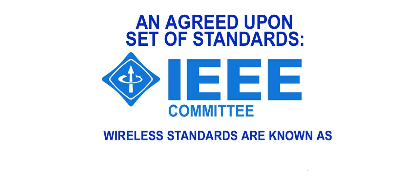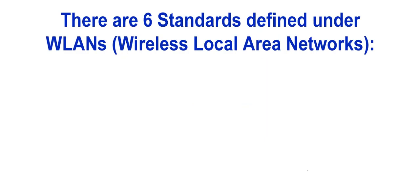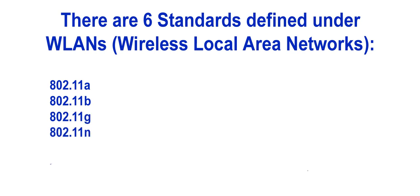When it comes to wireless networking, the set of standards the IEEE defines are known as 802.11. The IEEE committee has defined six standards under the Wireless 802.11 Wireless Local Area Networks, WLANs. Those six standards are: 802.11a, 802.11b, 802.11g, 802.11n, 802.11ac, and 802.11ad.